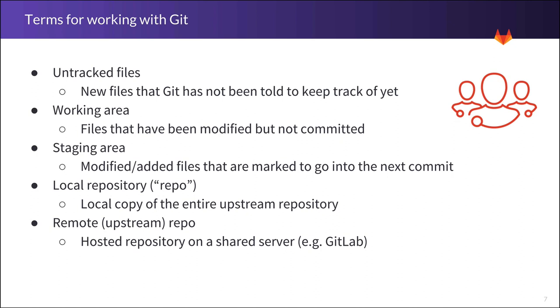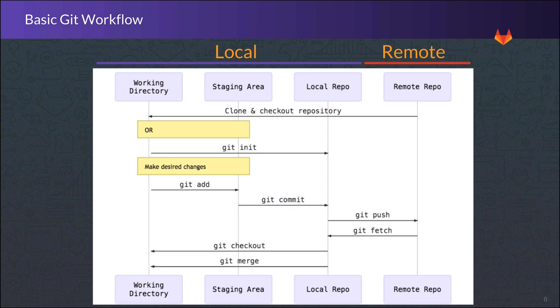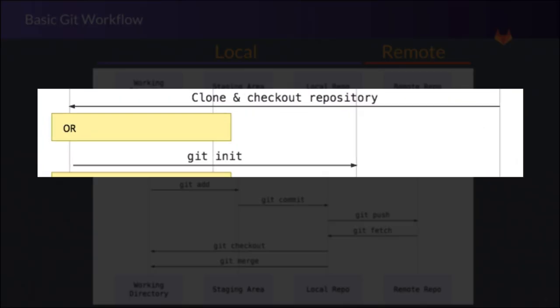Next, let's put it all together by looking at the basic Git workflow. While this diagram may seem complex at first, we are going to go over each part. First, we need to have a Git repository. Often times, this is acquired by cloning an existing repository from the remote to our local computer.